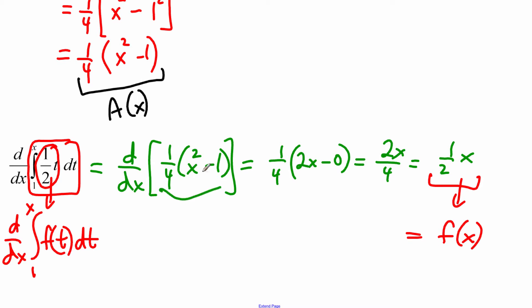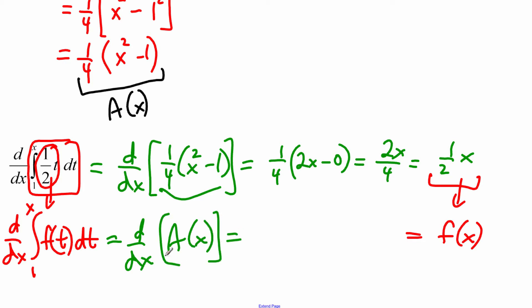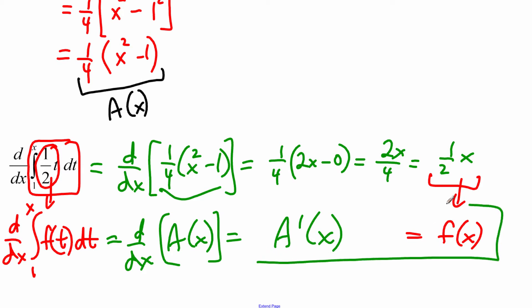This was our area function. To notate this: the derivative of A(x) is A'(x). What we're saying is that the derivative of our area function — the derivative of our definite integral — is the original function we started with, but at x instead of t. This is the essential point of the Second Fundamental Theorem of Calculus, which I'm going to get to in a moment.